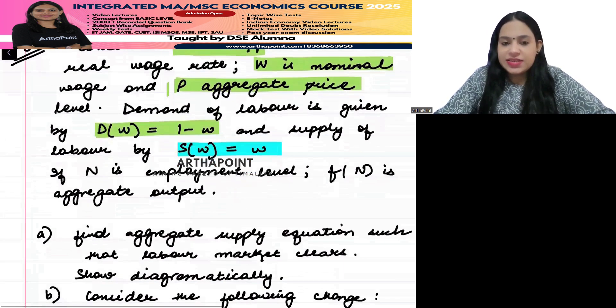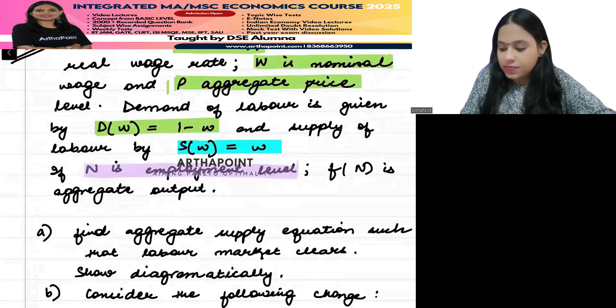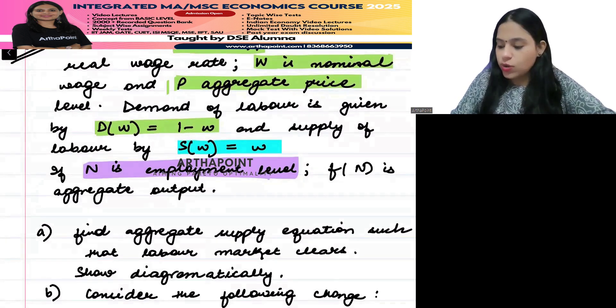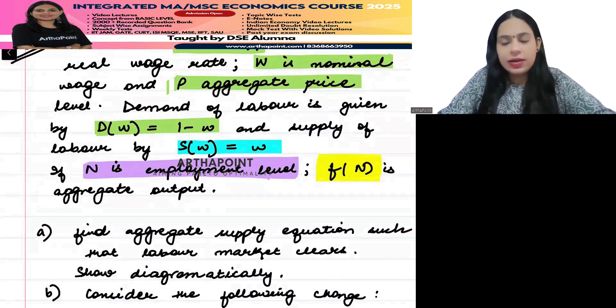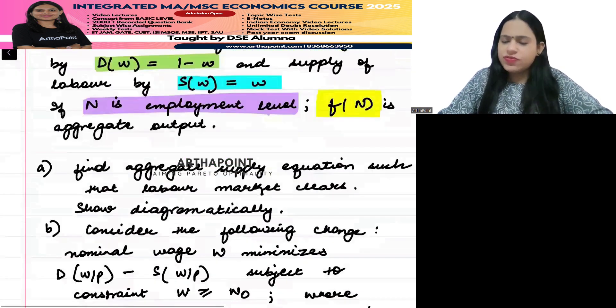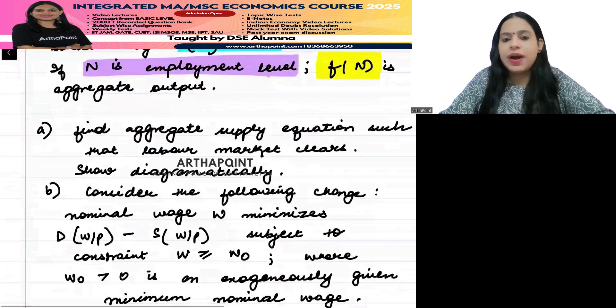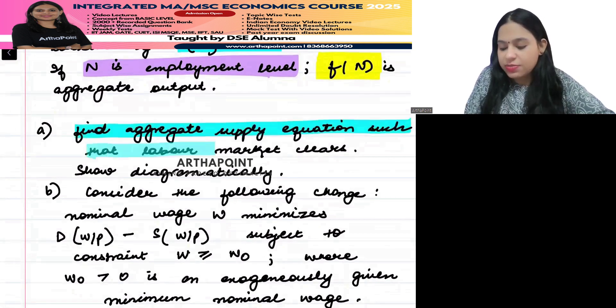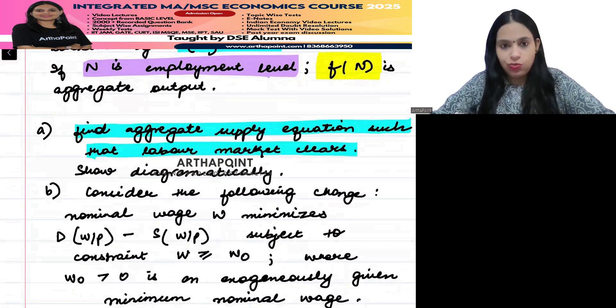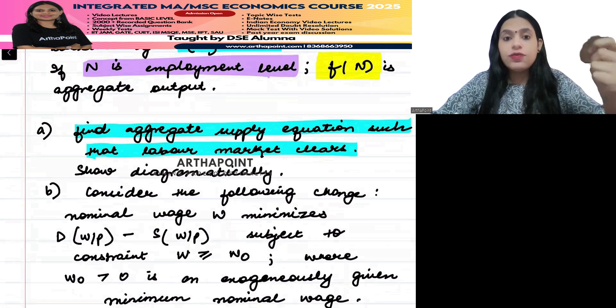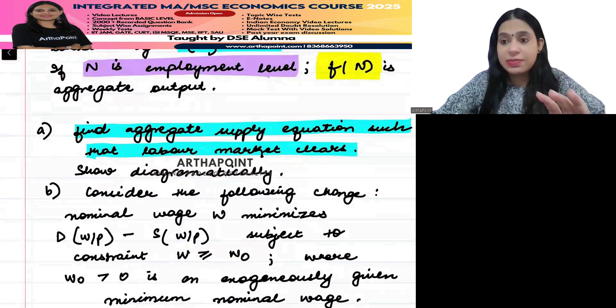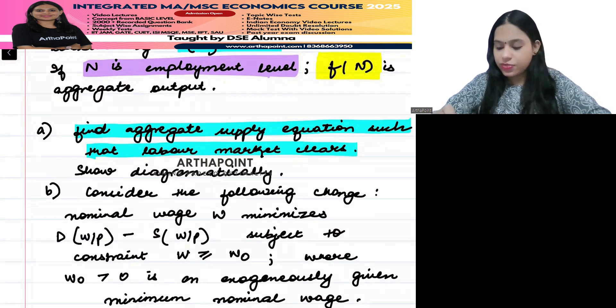N is the employment level and F(N) is the aggregate output. So you have output as a function of the number of labor employed. Look at part A of this question. It says find the aggregate supply equation such that the labor market clears. The AS curve is derived from the equilibrium of your labor market. You need to use the equilibrium condition of the labor market and find the equation of the AS curve.